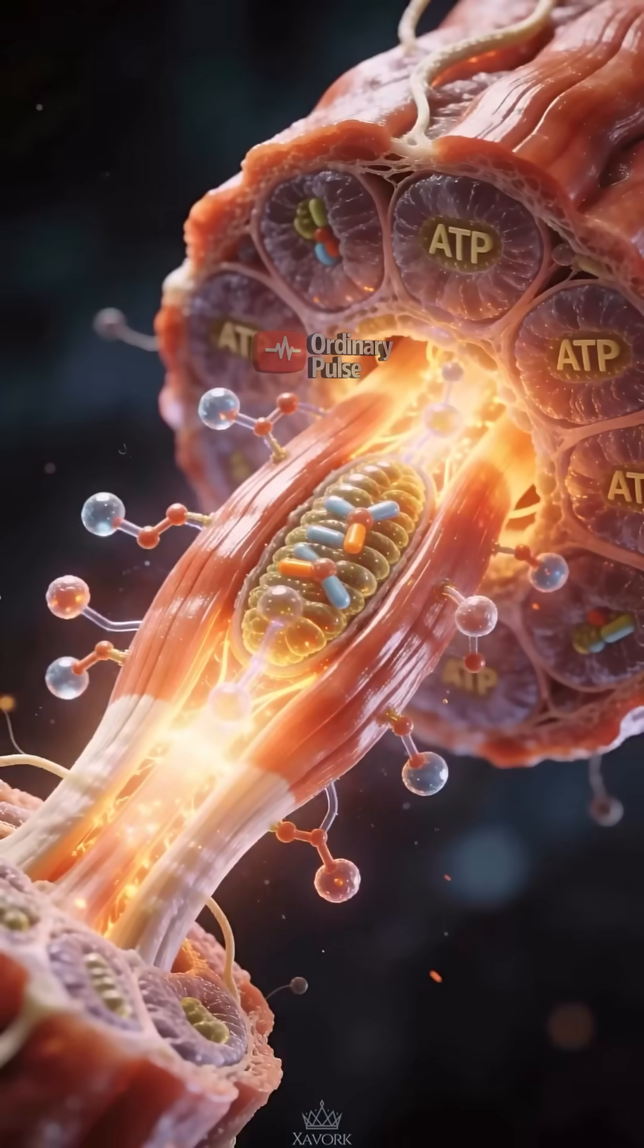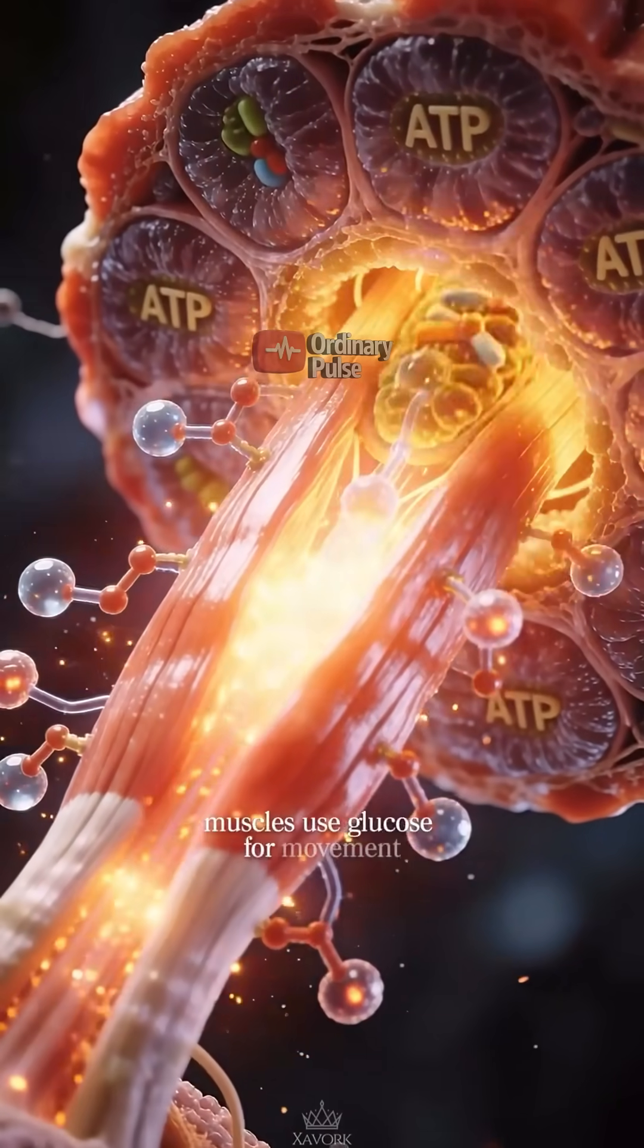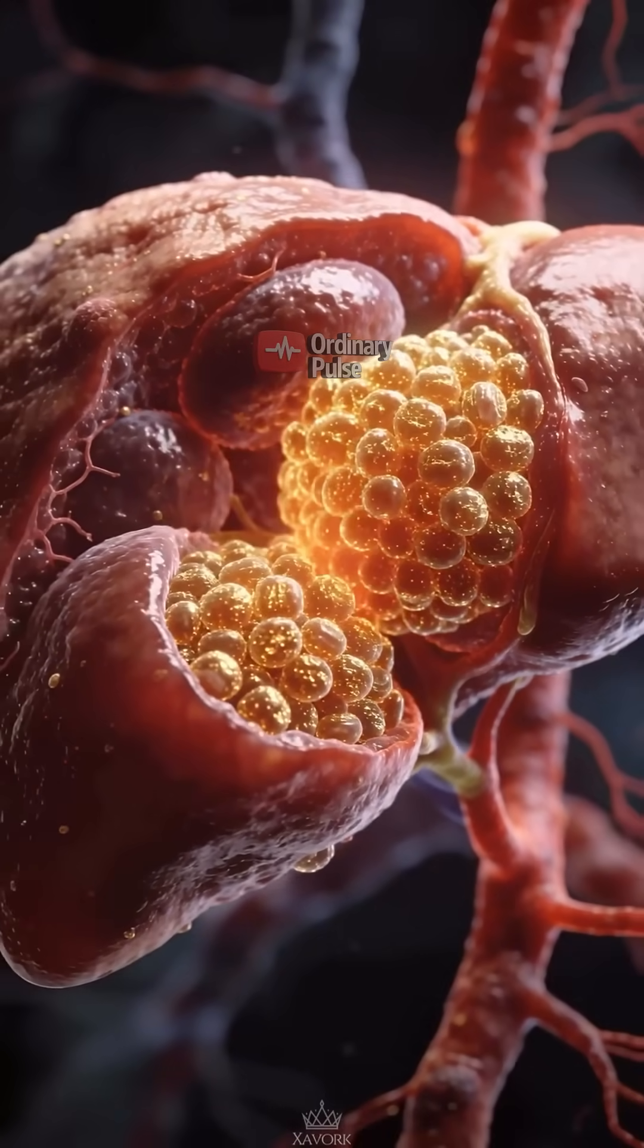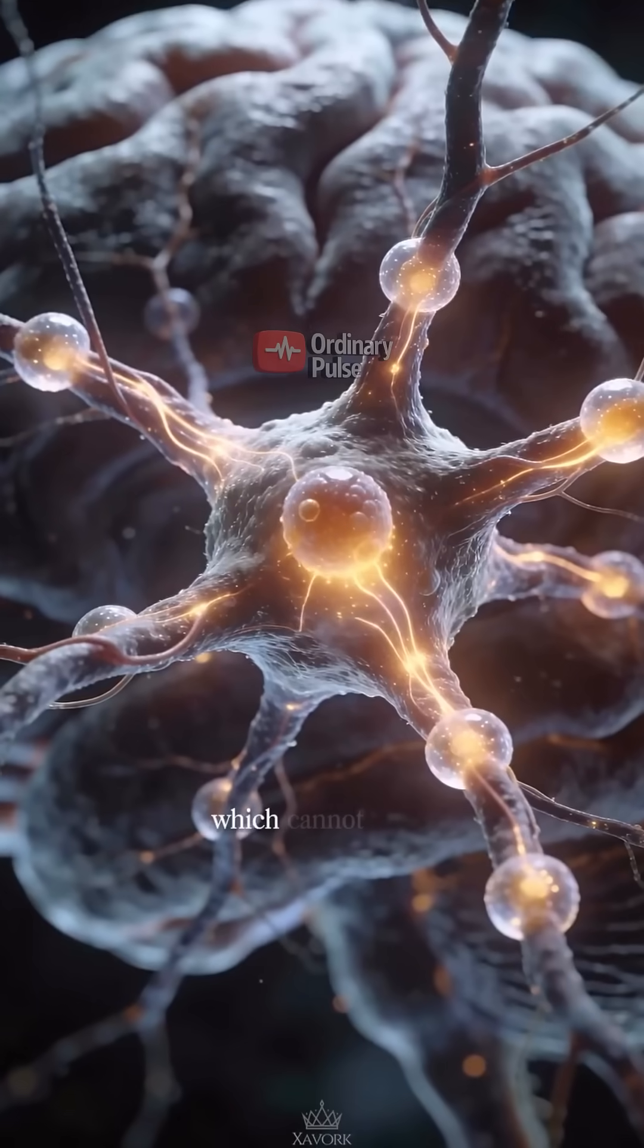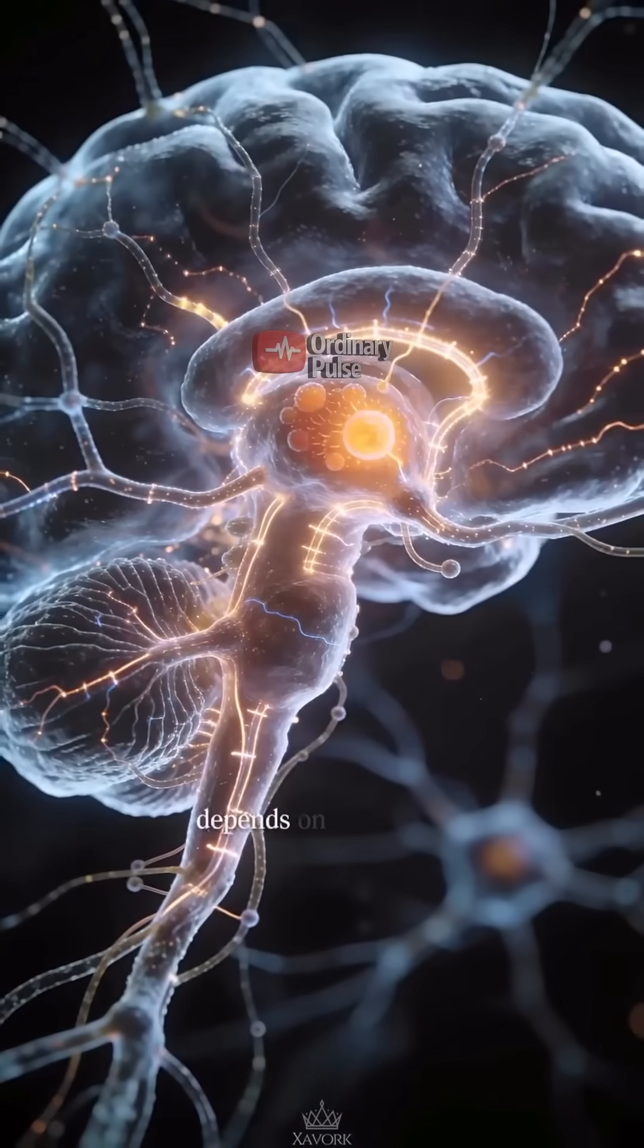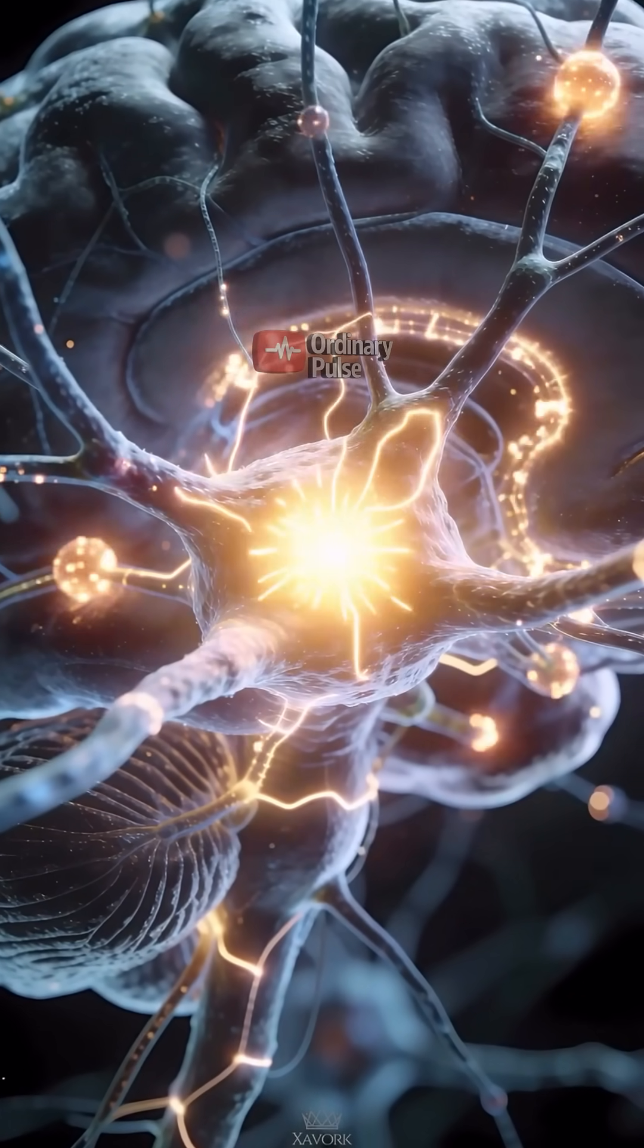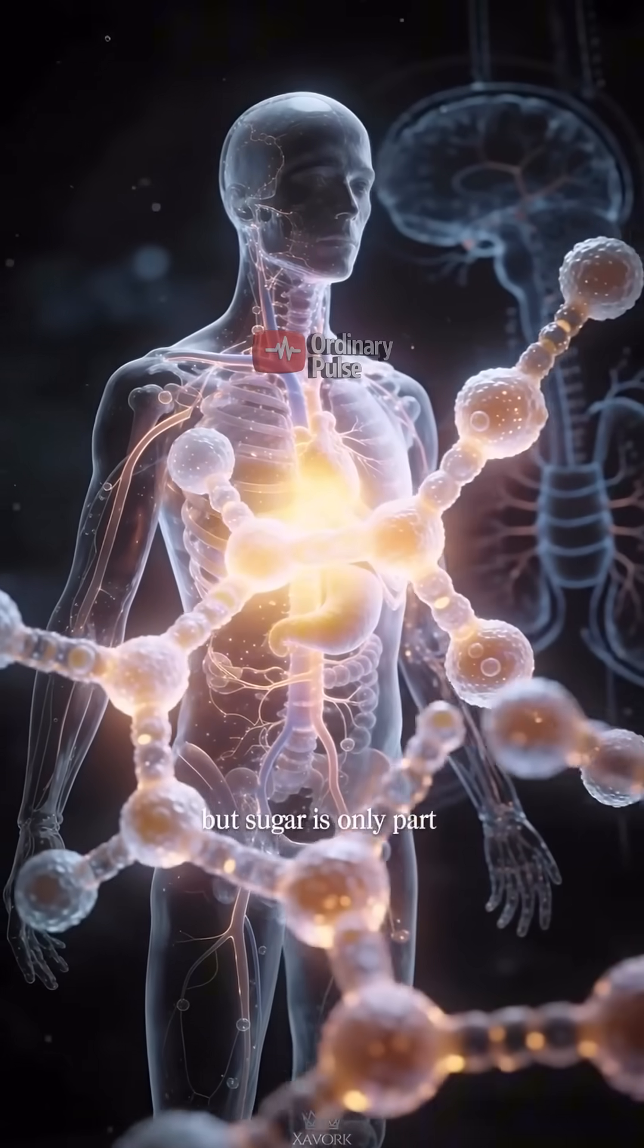Each cell responds differently. Muscles use glucose for movement. The liver stores it as glycogen for future demand. And the brain, which cannot store energy, depends on a constant glucose supply to think, remember, and focus.